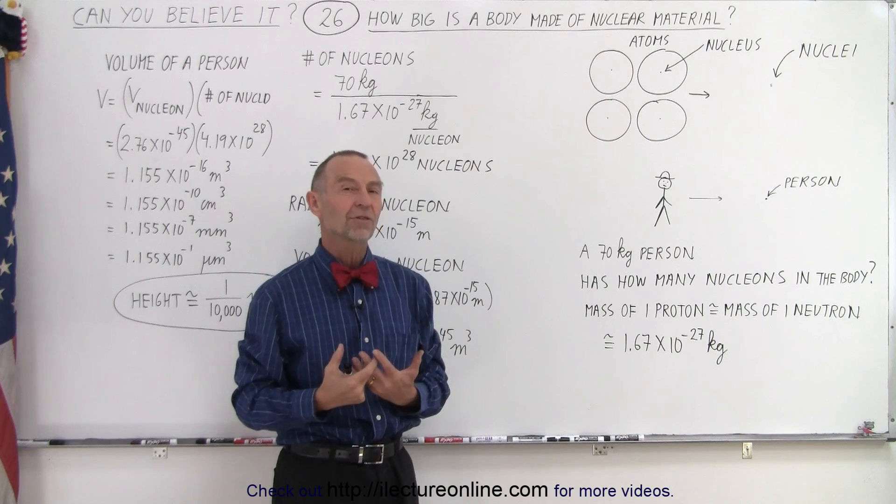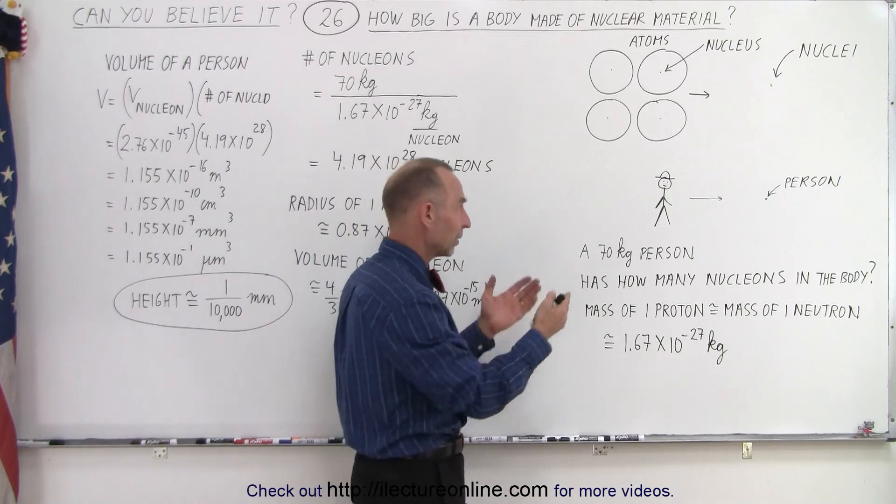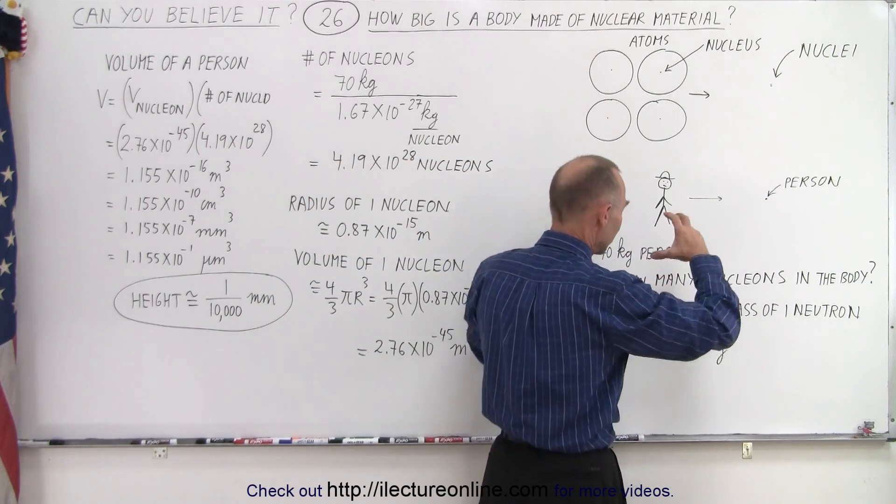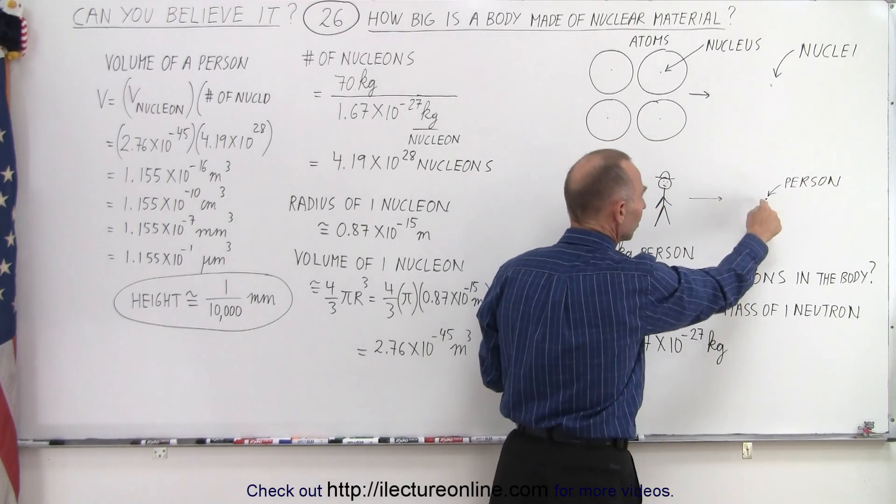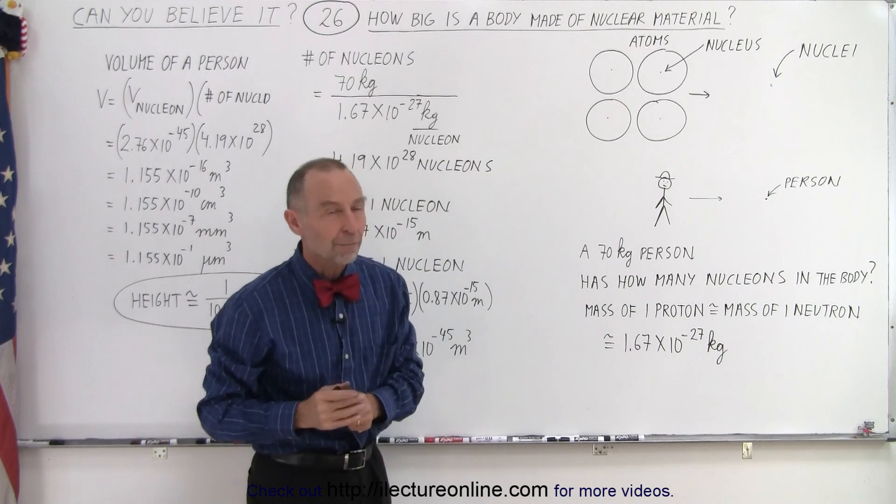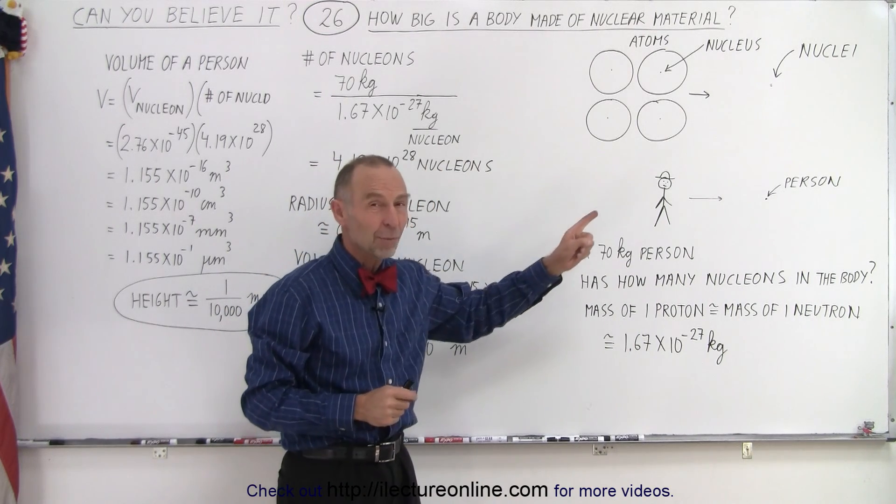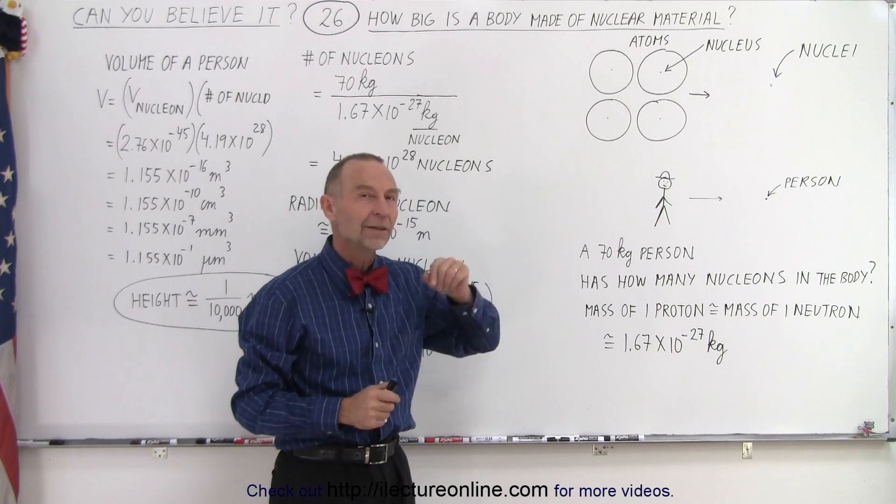Well, how big would a person be under the same circumstances? If we take a regular person, let's say a 70 kilogram person, and we squeeze all the space between the atoms, so that now we have nucleus against nucleus, how big would that person be? It would be smaller than a pin prick on this whiteboard.